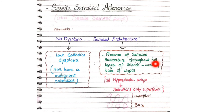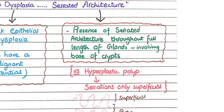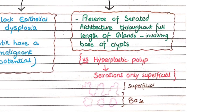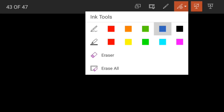Sessile serrated adenomas have a serrated architecture, as implied by their name. This serrated architecture is present throughout the full length of the glands, involving the base of crypts. In contrast, in hyperplastic polyps, serrations are present only on the surface of the epithelium.